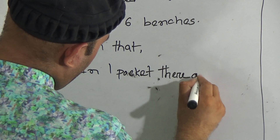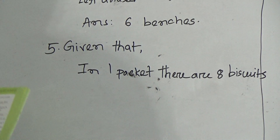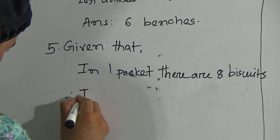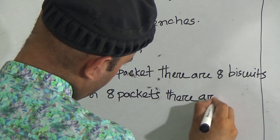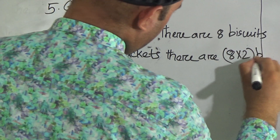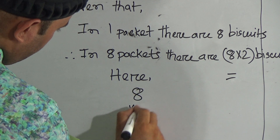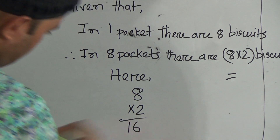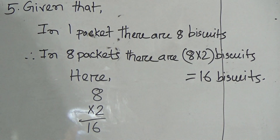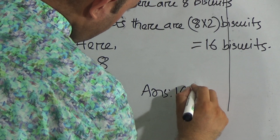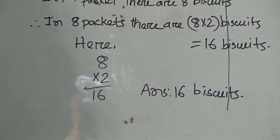Given that there are 8 biscuits in one packet, and she bought 2 packets of biscuits. Therefore, in 2 packets there are 8 multiplied by 2 biscuits. Now remember the times table of 2 — 2 eights are 16. So how many biscuits are there? The answer is 16 biscuits. Hope you understood this one.